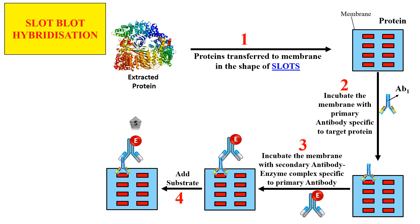The substrate is then added and converts into a colored product. By measuring the intensity or amount of colored product, we can also quantify the amount of target protein present in the sample. This is slot blot hybridization because the sample is loaded in the form of rectangular slots and hybridization refers to using antibodies to hybridize with target proteins. These are the two techniques — dot blot and slot blot hybridization. That is all for today. See you in the next video. Thank you very much.